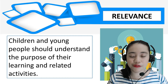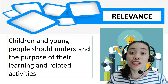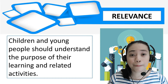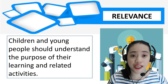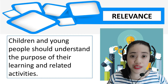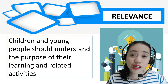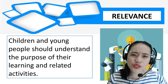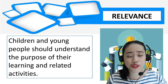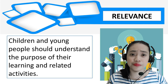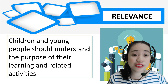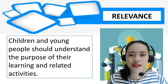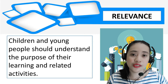The sixth is relevance. Children and young people should understand the purpose of their learning and related activities. They should see the value of what they are learning and its relevance to their lives, present and future. They should know the importance of why they are learning such a concept.